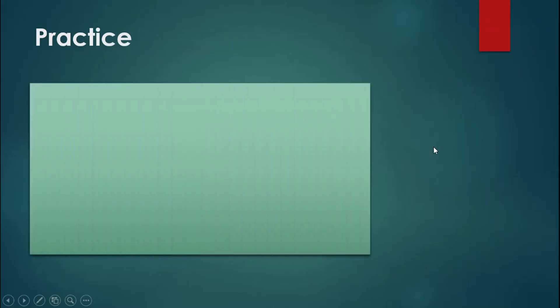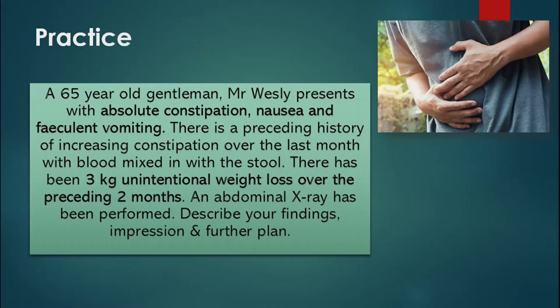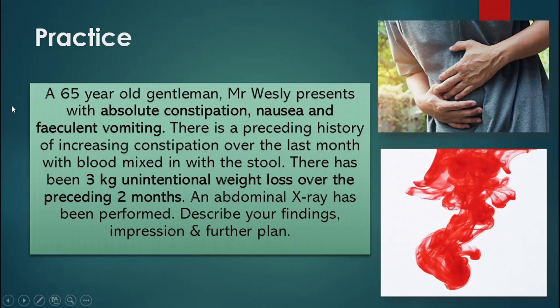Let's have a practice and go through one abdominal X-ray. A 65-year-old gentleman, Mr. Wesley, presents with absolute constipation, nausea, and feculent vomiting. There is a preceding history of increasing constipation over the last month with blood mixed in with stool. There has been a 3 kg unintentional weight loss over the preceding two months. An abdominal X-ray has been performed — describe your findings, impression, and further plan.